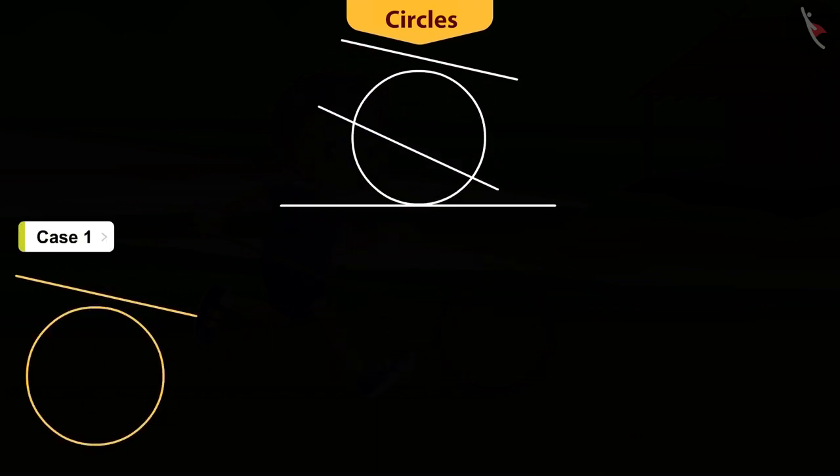In the first case, the line, say PQ, does not coincide with the circle at any point. In this case, line PQ is a non-intersecting line with respect to the circle.